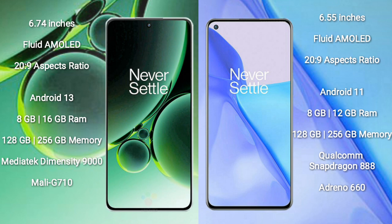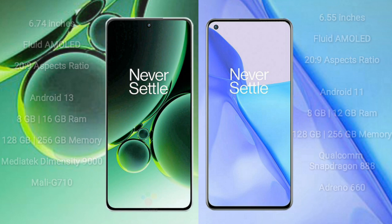The OnePlus 9 comes with 8GB or 12GB RAM and 128GB or 256GB internal storage, powered by the Qualcomm Snapdragon 888 processor and an Adreno 660 GPU.